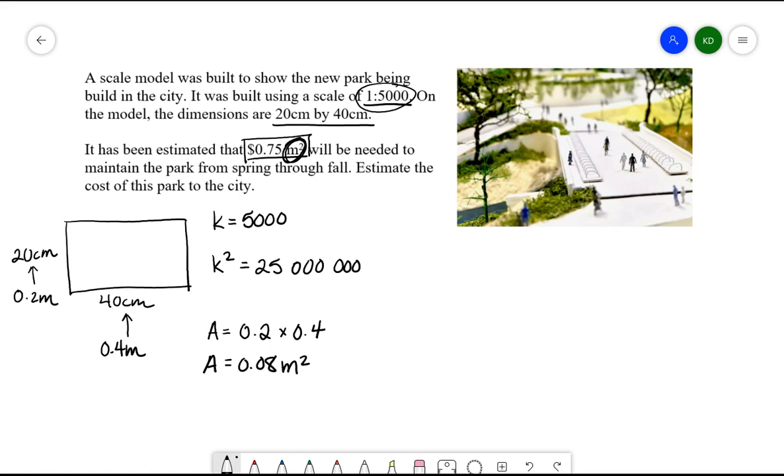What we want to do now is use our k squared value, our area scale factor, to figure out what the area of the actual park is. So the actual area is going to be equal to 25 million multiplied by the area of the scale model, so 0.08. When we multiply those together, what we're going to get here is 2 million. So we will have 2 million square meters for this park.